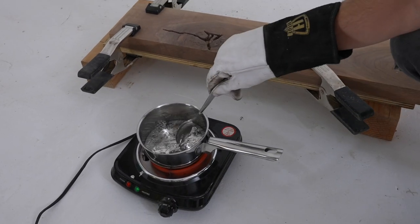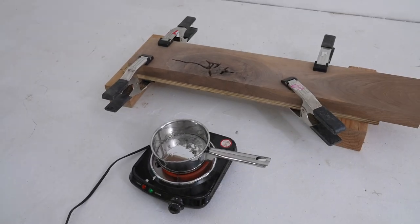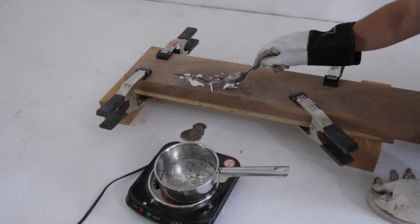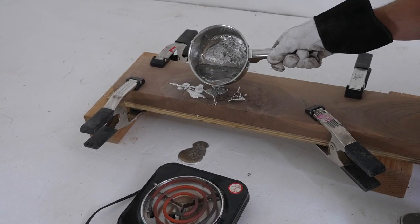Today we're melting metal and pouring it into wood. I'm using a metal alloy comprised of tin and bismuth. It melts at low temperatures, which is great because it won't burn this piece of walnut.